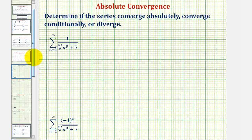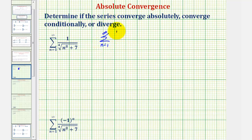Going back to our two examples, notice how the terms of this series would always be positive, and therefore if this series converges, the summation of the absolute value of a sub n will also converge — so if this converges, we can say it's absolutely convergent. We'll use a comparison test, and notice how this series resembles the summation from n equals one to infinity of one divided by the fourth root of n to the eighth, which simplifies to the summation of one divided by n squared. This series converges by the p-series test with p equals two.